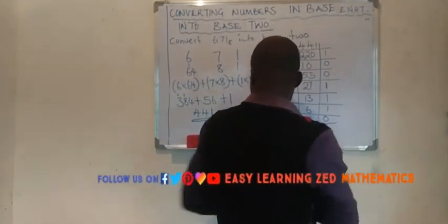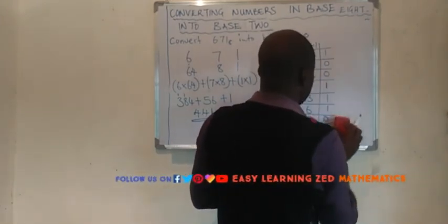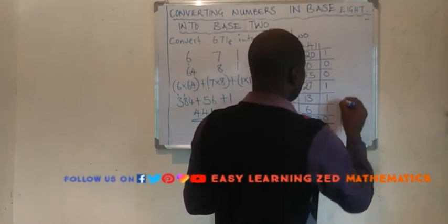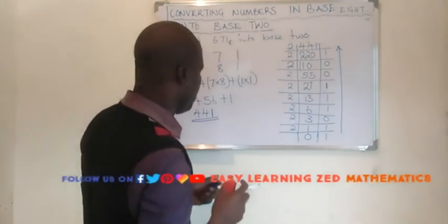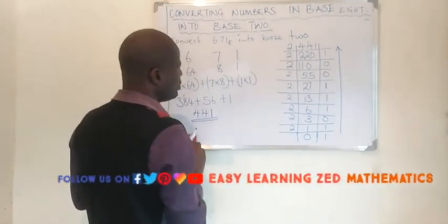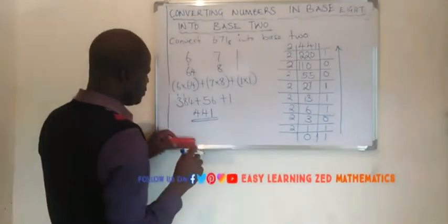So remember, when writing the answers from remainders, what you need to do, you start from down going up. So you start with the last remainder up to the first remainder. The first remainder will be the last remainder.